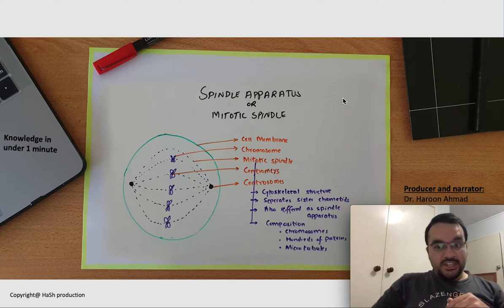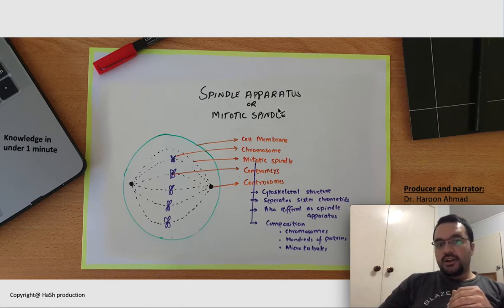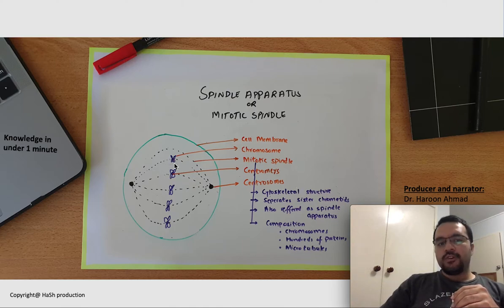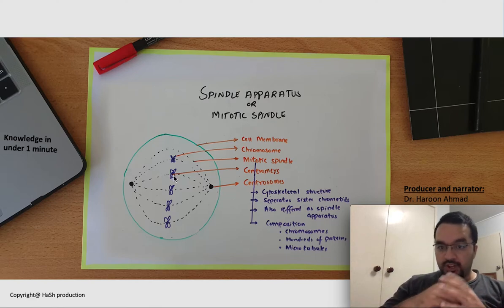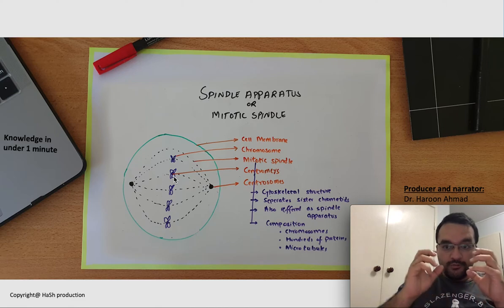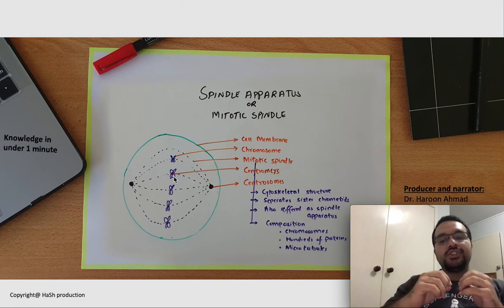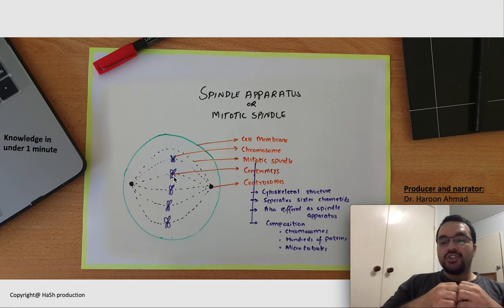Mitotic spindles, which are sometimes also referred to as a spindle apparatus, are actually cytoskeletal structures which comprise chromosomes, microtubules, and hundreds of other proteins that help the separation of the chromatids or the duplicated chromosomes from the center of the dividing cell to the opposite poles, so that each daughter cell can get an equal number of genetically identical copies.